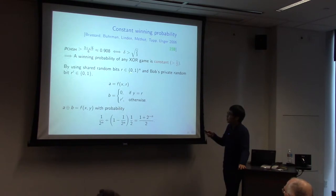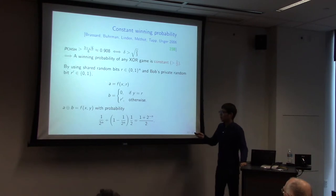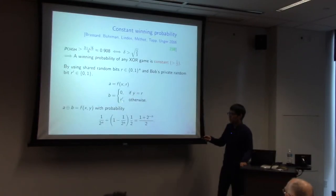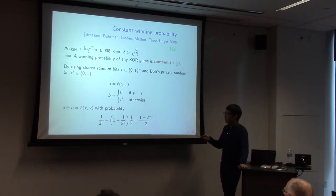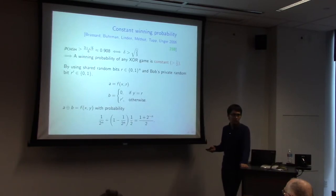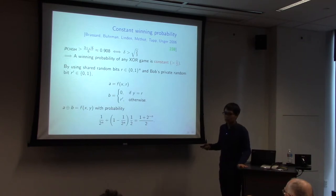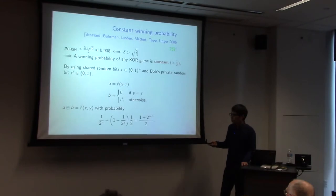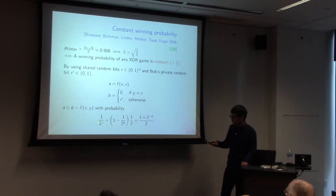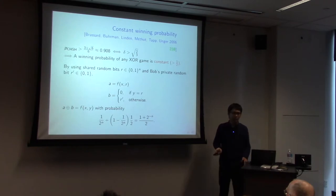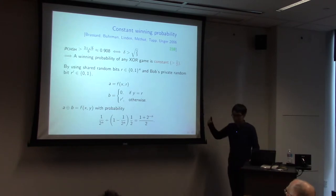The simple protocol uses shared n-bit random bits R, random bit R', and sets A = F(x, R), and B = 0 if Y equals R, and B = R' otherwise. If Y equals R, then B=0 and A = F(x,Y), so A XOR B equals F(x,y) with probability 1. For other cases, B = R' is a uniform random bit, so their XOR is a uniform random bit and the equality holds with probability 1/2. The winning probability is 1 over 2^n (probability of Y=R) times 1, plus the remaining cases times 1/2 — giving bias slightly greater than 1/2 but very small: 2^(−n).